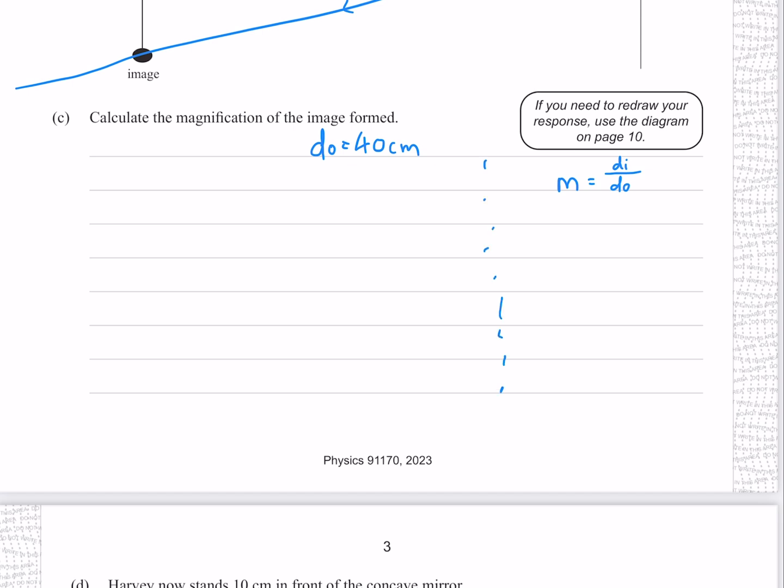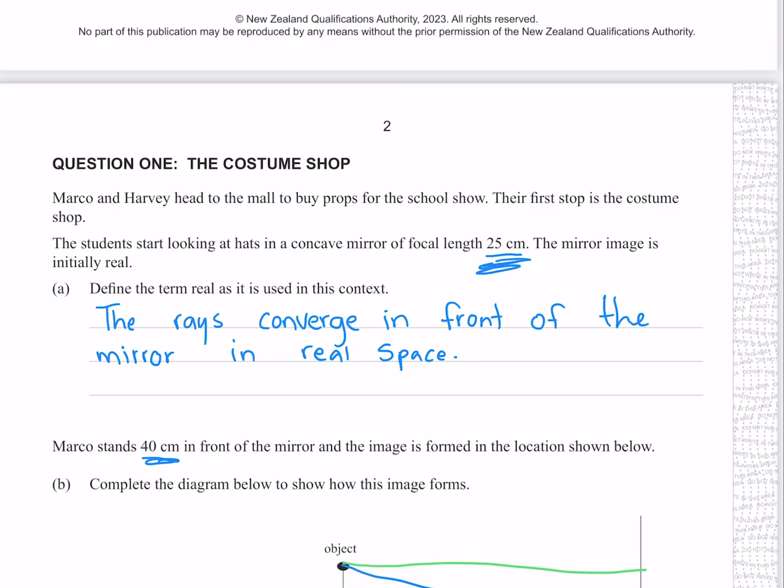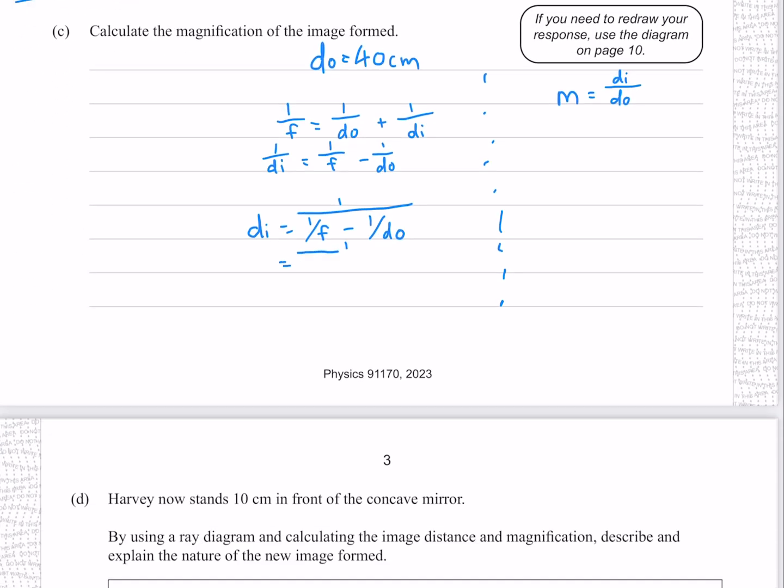To do this we can use Descartes law. Solving this for DI by first subtracting 1 over DO from both sides and swapping them around, and now taking the inverse of both sides. Putting our numbers in, where we were given the focal length at the start of the question, which gives me 66.7 to 3 significant figures. Which we can now use in our magnification equation, which gives me 1.7 to 2 significant figures.